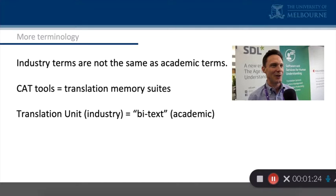What is confusing is the fact that they talk about a translation unit as being the union of an ST segment with a TT segment. I'm using translation unit in the psychological or cognitive study sense — the amount of ST that is processed in order to produce a TT. So there are two very different meanings: one from industry, the other from cognitive studies. Beware.